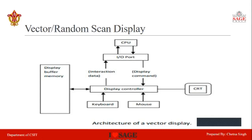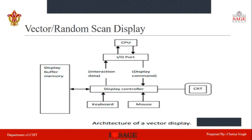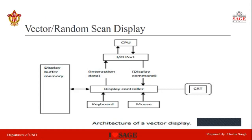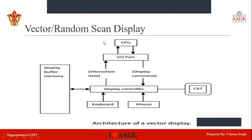The electron beam rides on the cathode ray tube phosphor coating. The phosphor light decays after a few milliseconds, so we have to refresh the phosphor at least 30 to 60 times per second. That means our refresh rate will be 30 to 60 frames per second for vector or random scan display.